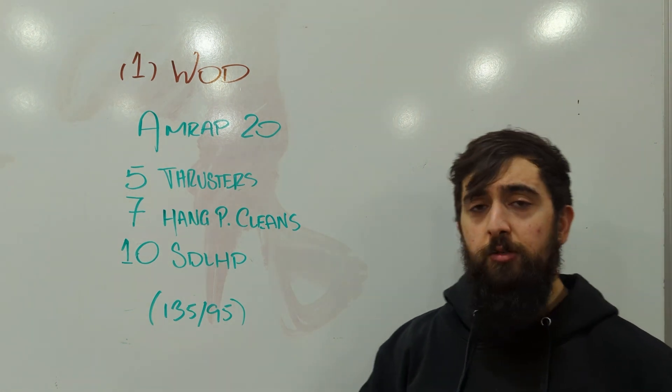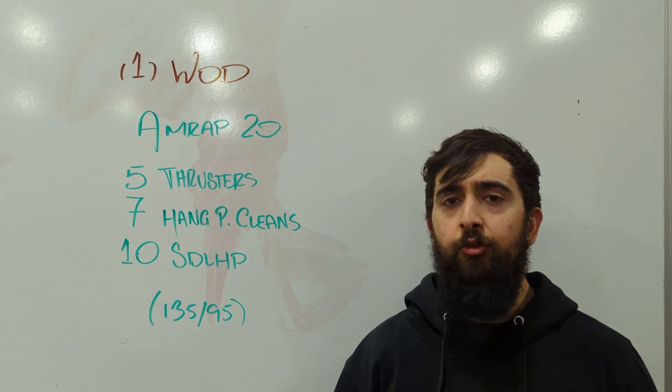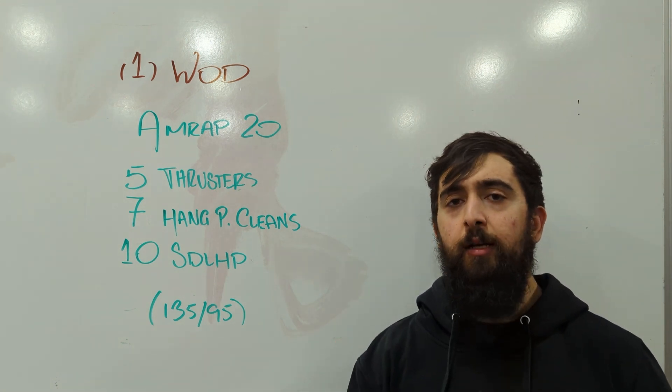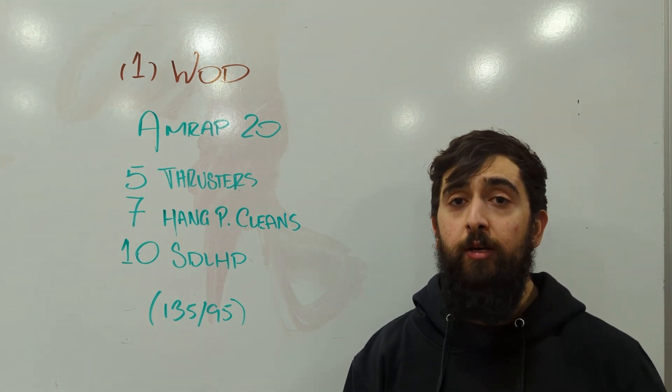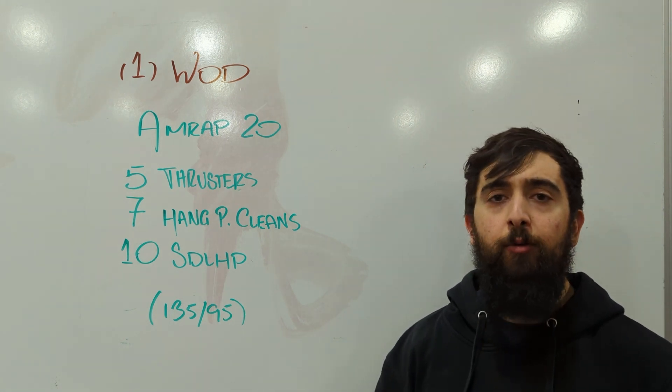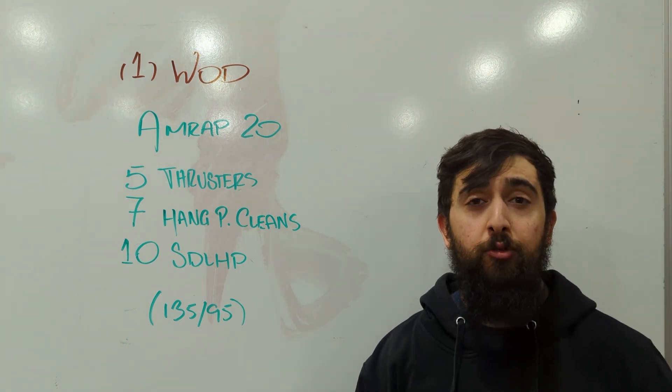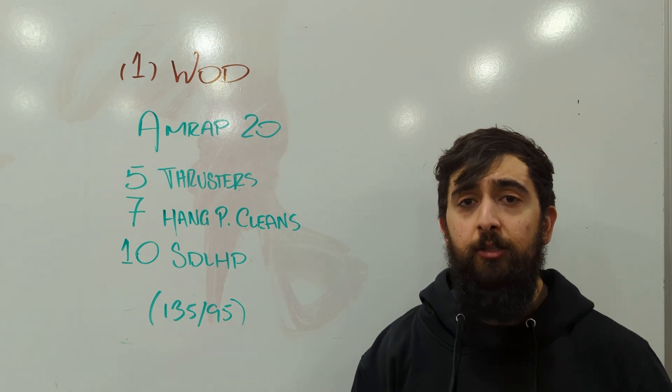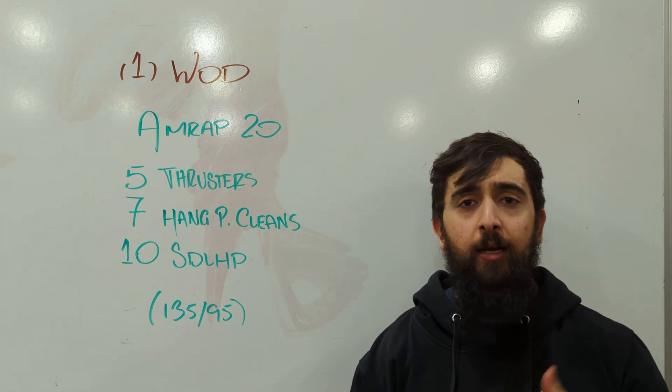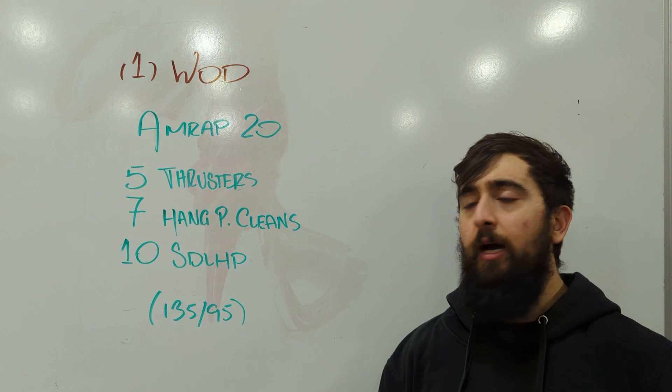So five thrusters, ideally in two sets or in one set. If you do three and two, that's okay as well, especially when you're deep into the workout. But if you're doing that right off the bat and it feels super challenging to do three and two, let's definitely lighten the load a little bit so we're hitting that perfect zone for you in that workout.